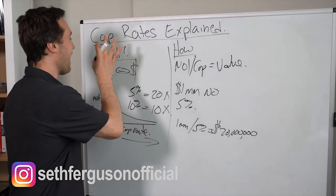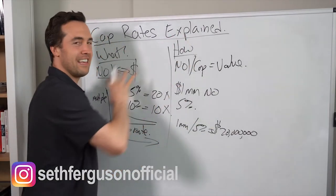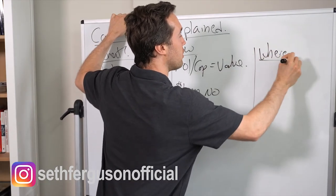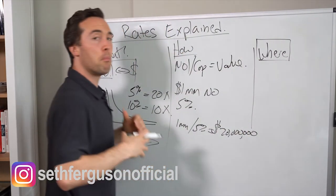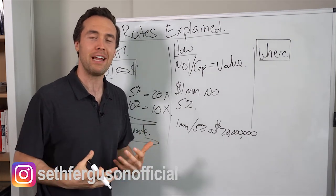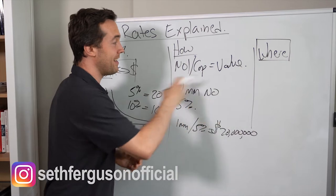Now we know what a cap rate is, we know how to use it in the income approach, but where do we find cap rates? Well, you'll often hear people talk about market caps. What is a market cap? It's basically the prevailing cap rate at which properties are trading in a given market.